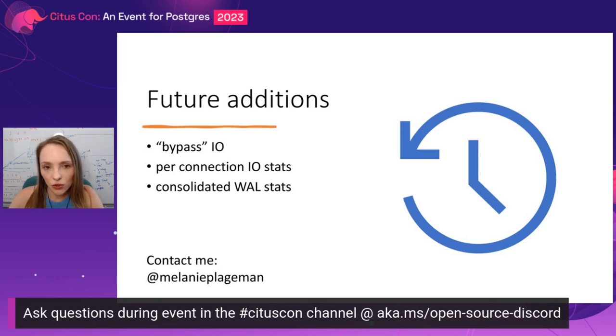I'll be answering questions on Discord — I'd love to hear about your use cases and questions, and I'm really excited for people to use the view in Postgres 16 and tell me what they think. For someone who's familiar with PGStat statements, when should they think about using PGStat.io versus PGStat statements? PGStat statements is still going to be your go-to when you care about per-statement, per-query information. If you already know a specific query is really slow, you want to use PGStat statements for sure.